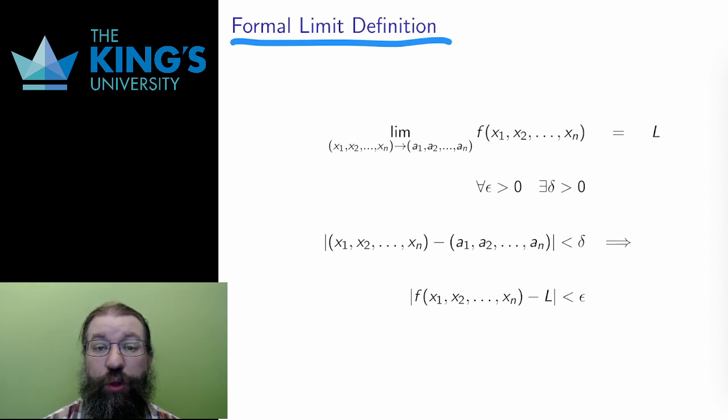In any case, the first new thing about a scalar field limit is the fact that the approach is now in R^n, the domain of the scalar field. It's not just a limit as x approaches a, but a limit as a vector (x₁ to xₙ) approaches a point (a₁ to aₙ) in R^n. Then the output, which is a scalar, does approach a particular scalar value L.